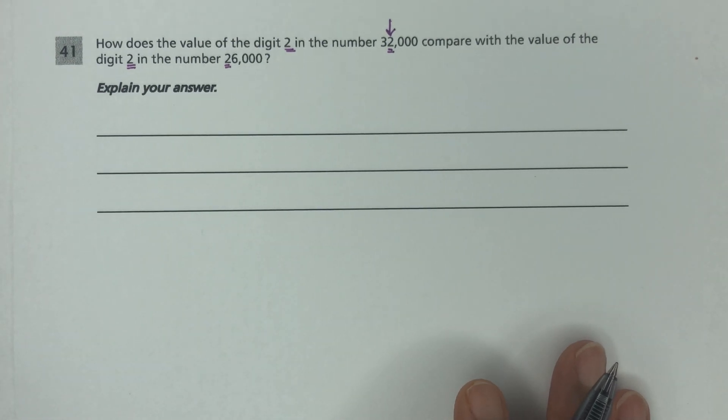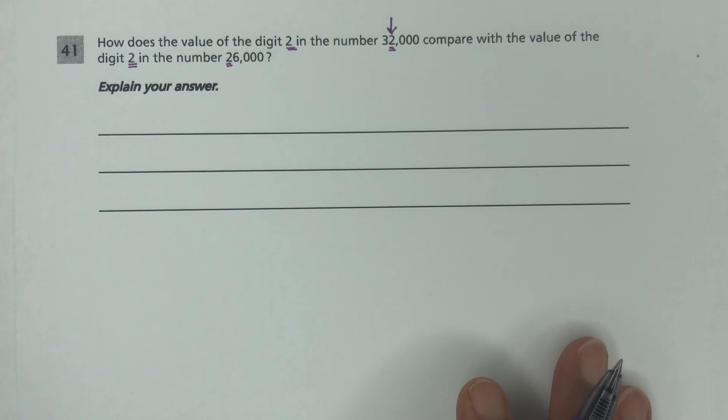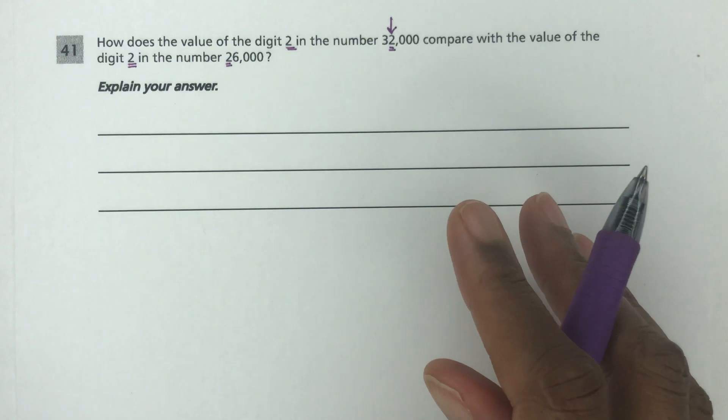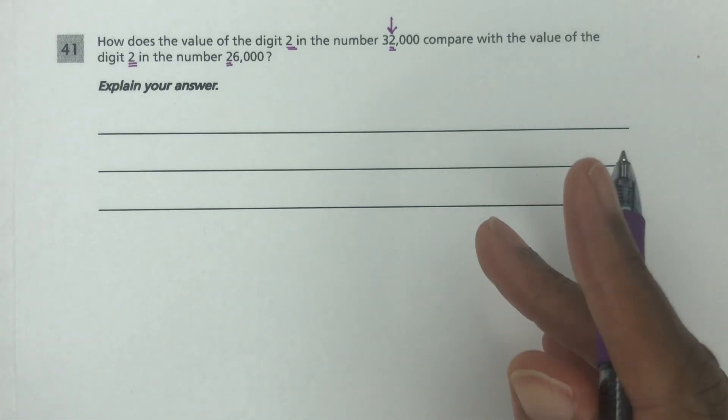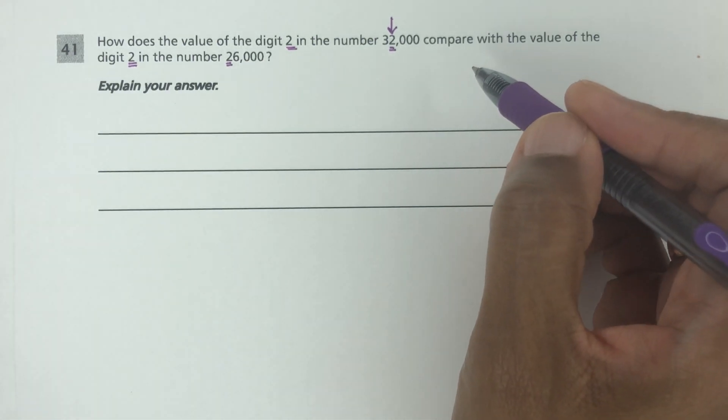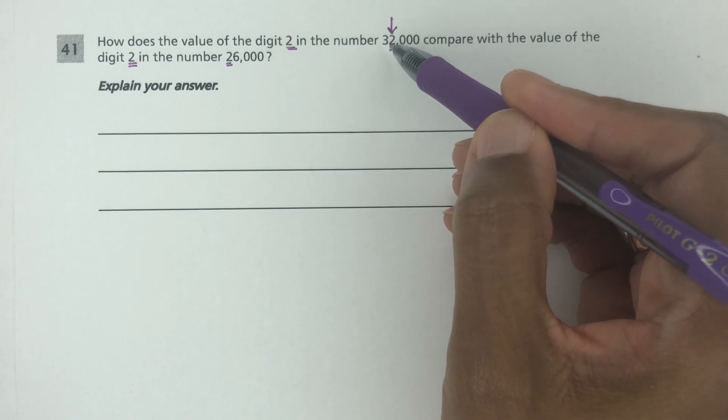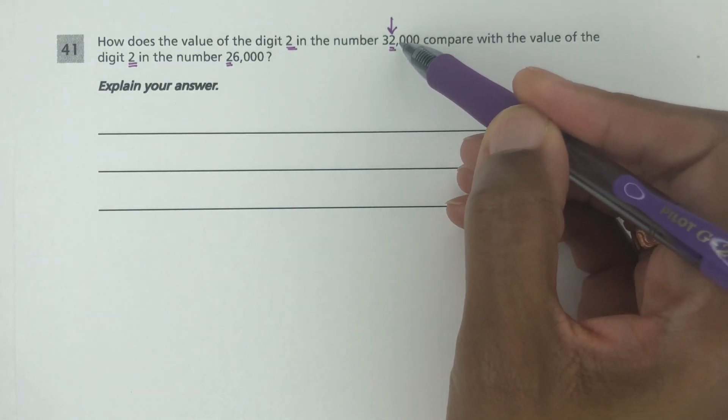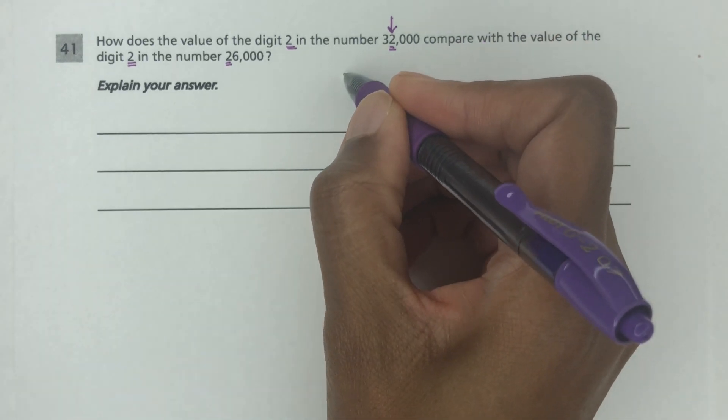If you're not sure of your place values, please take a look at one of my other videos. You would say this number as 32,000, so here you have 2,000. The value of the digit here in this number is 2,000.